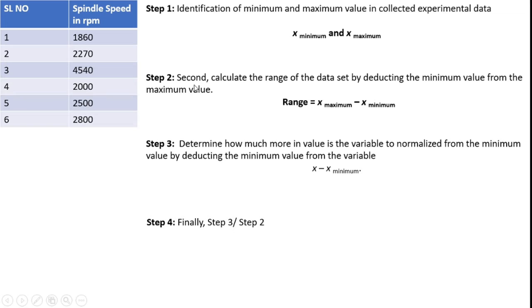Step 2 is range. Range between what is the maximum value and what is the minimum value, the difference between maximum and minimum. Likewise, we identify the range. Step 3: Determine how much more in value is the variable to normalize from the minimum value by deducting the minimum value from the variable, which means x minus x_minimum. X means x real value. X_minimum means the overall minimum value available with the table. Final step is step 3 divided by step 2, so that x minus x_minimum divided by x_maximum minus x_minimum, which is the final step.